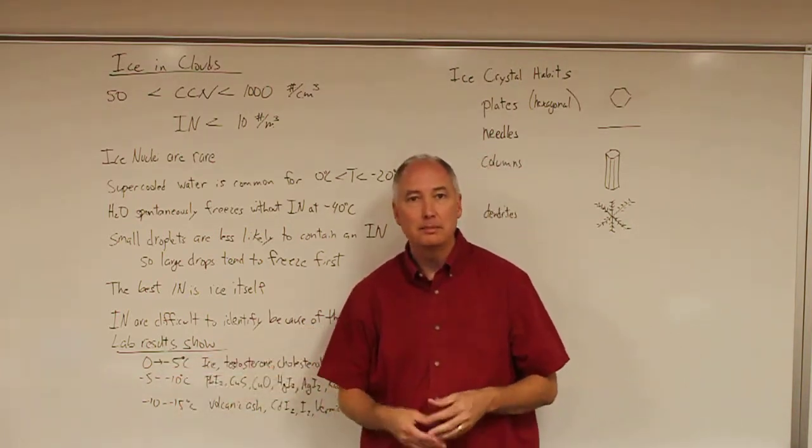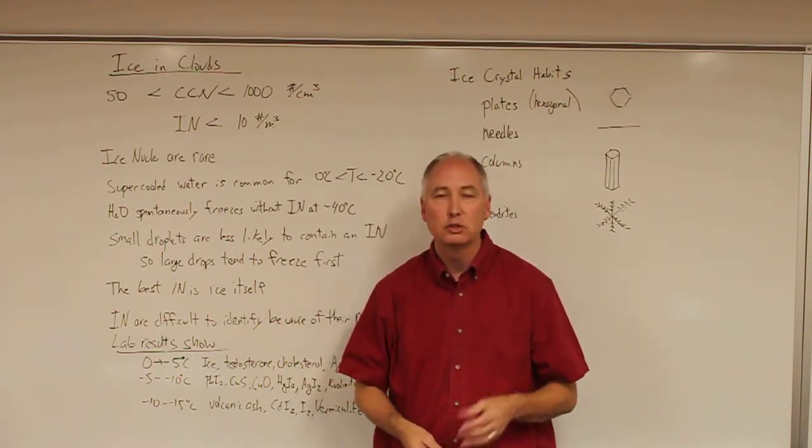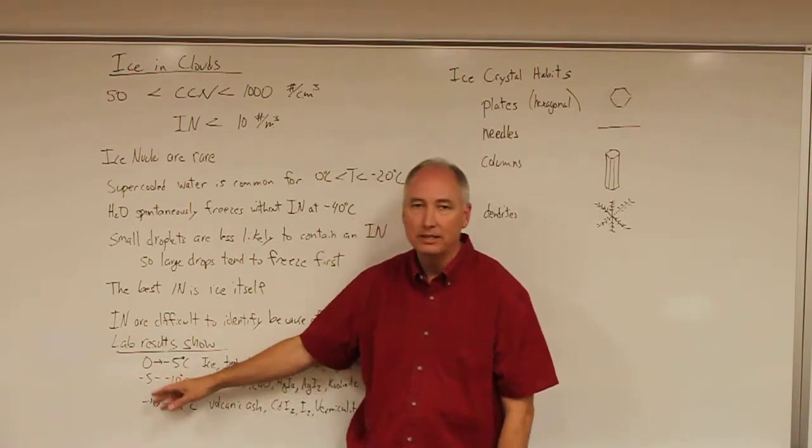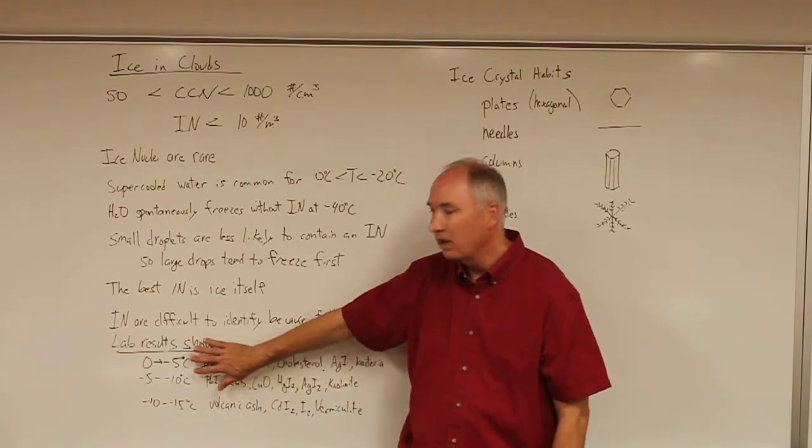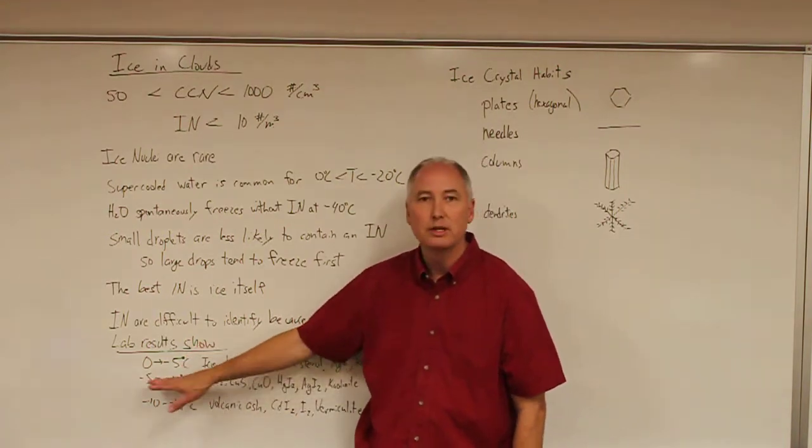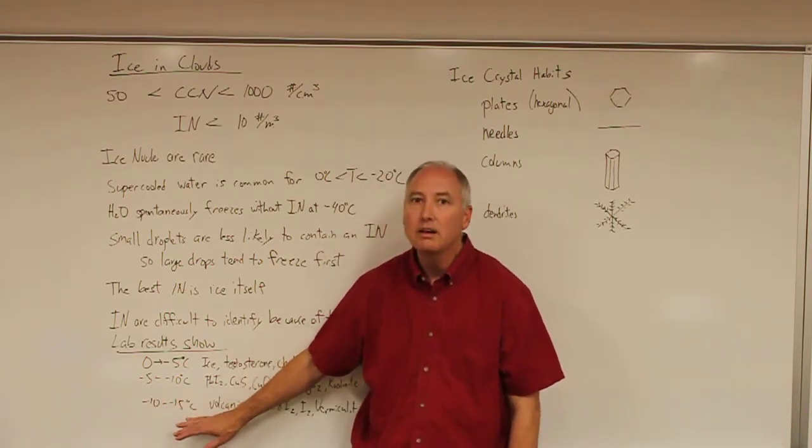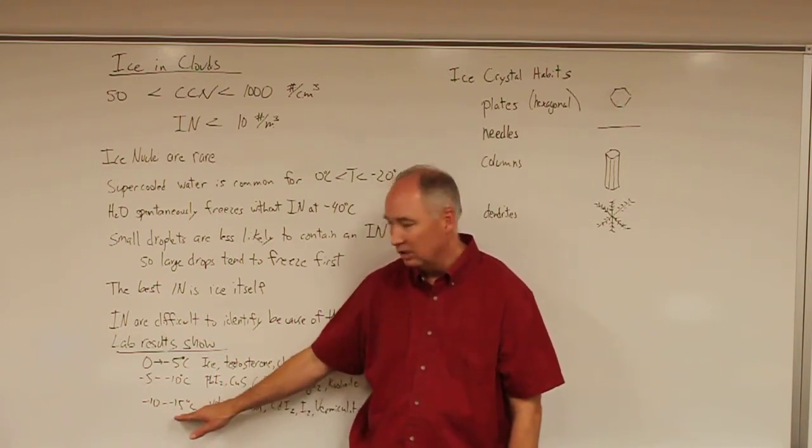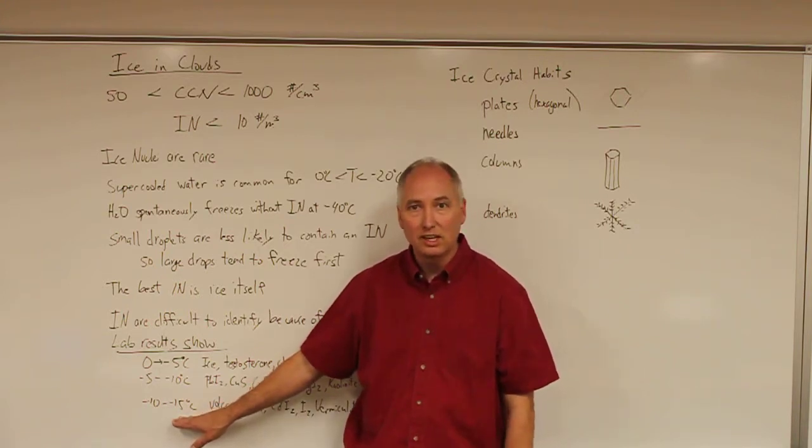Ice nuclei, because they're so rare, are very difficult to measure in the atmosphere. Most of the time we refer to laboratory results, which define ice nuclei into three groups: the really good ice nuclei that nucleate between 0 and -5°C; the moderately good between -5 and -10°C; and the not so good between -10 and -15°C. Things that don't nucleate until colder than -15°C are really not very good ice nuclei at all.